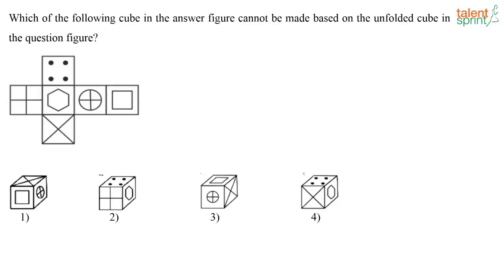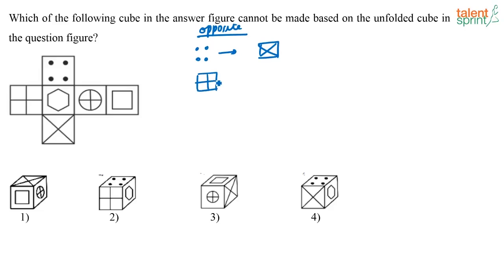Which of the following cubes in the answer figure cannot be made based on the unfolded cube in the question figure? Again for this question, let us write down the opposite faces. So when you fold this, the 4 dots will be opposite to this symbol, and the plus will be opposite to this one. Square will be opposite to the hexagon.